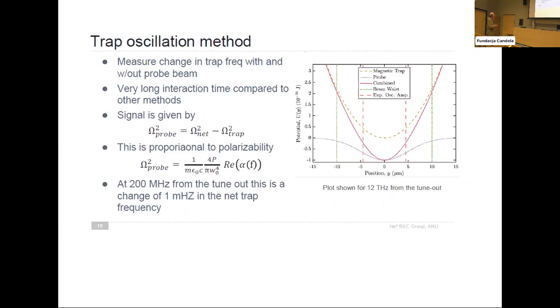So what we're looking for - the signal is given by the difference between the net frequency and the trapped frequency. This is the quantity that vanishes when the frequency-dependent polarizability vanishes as a function of frequency.